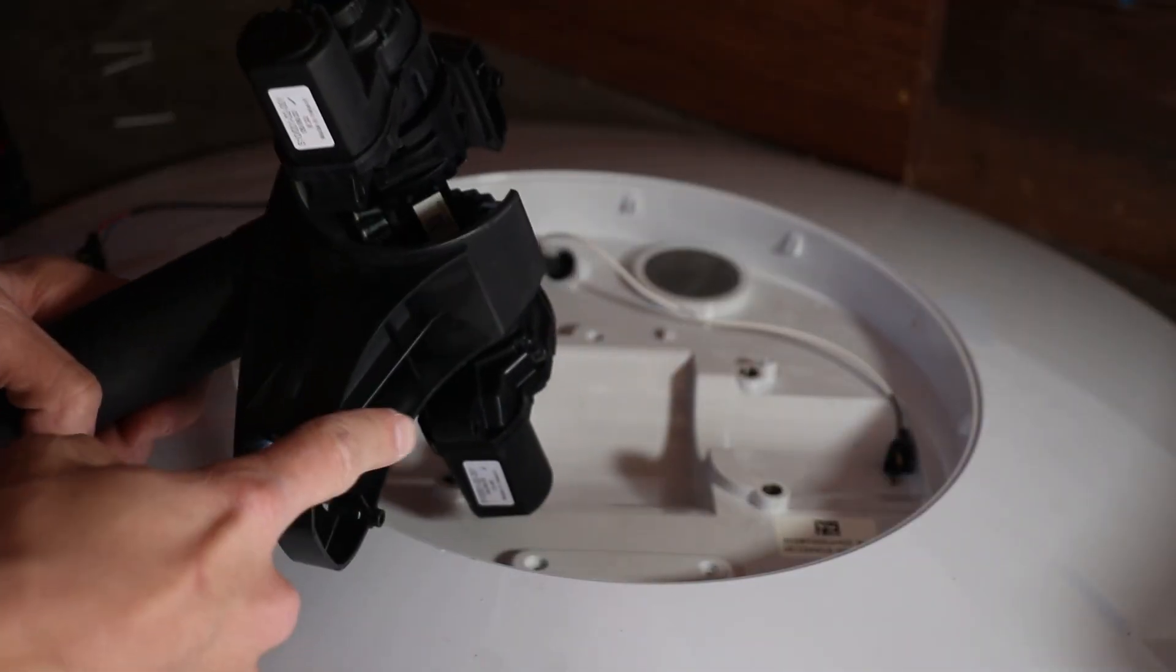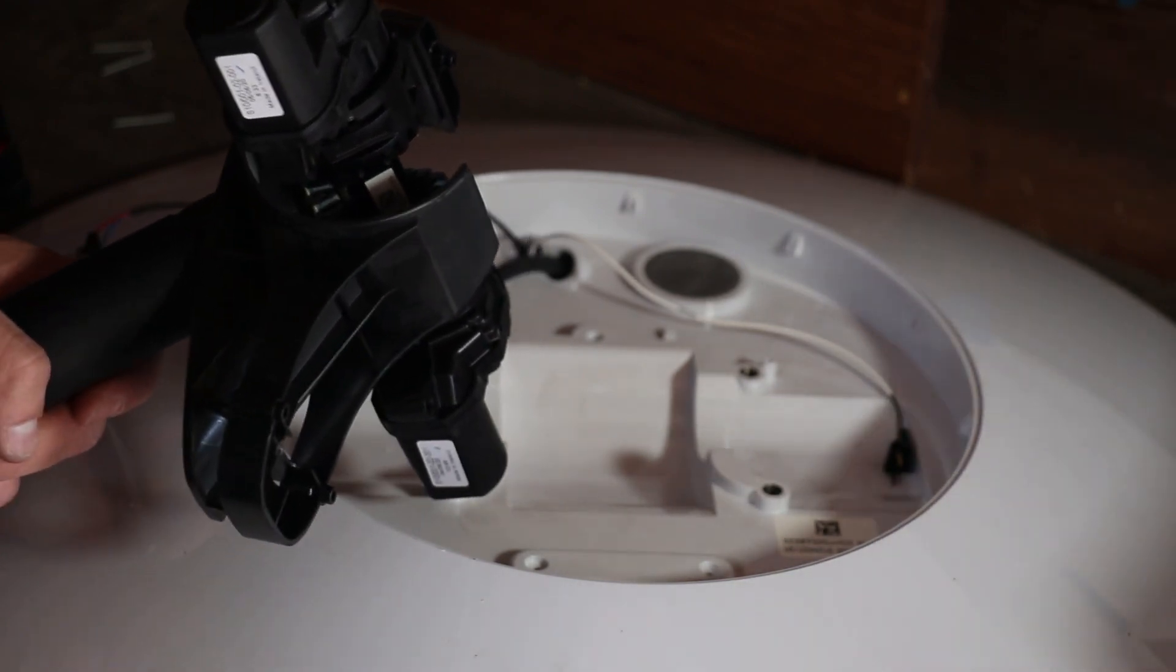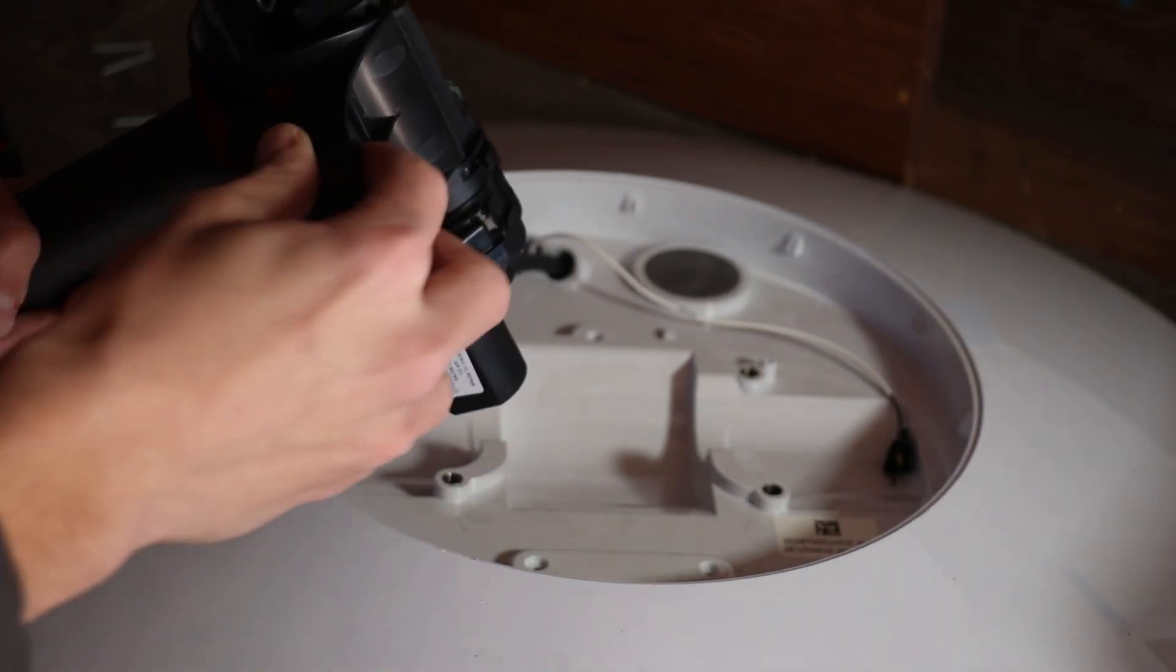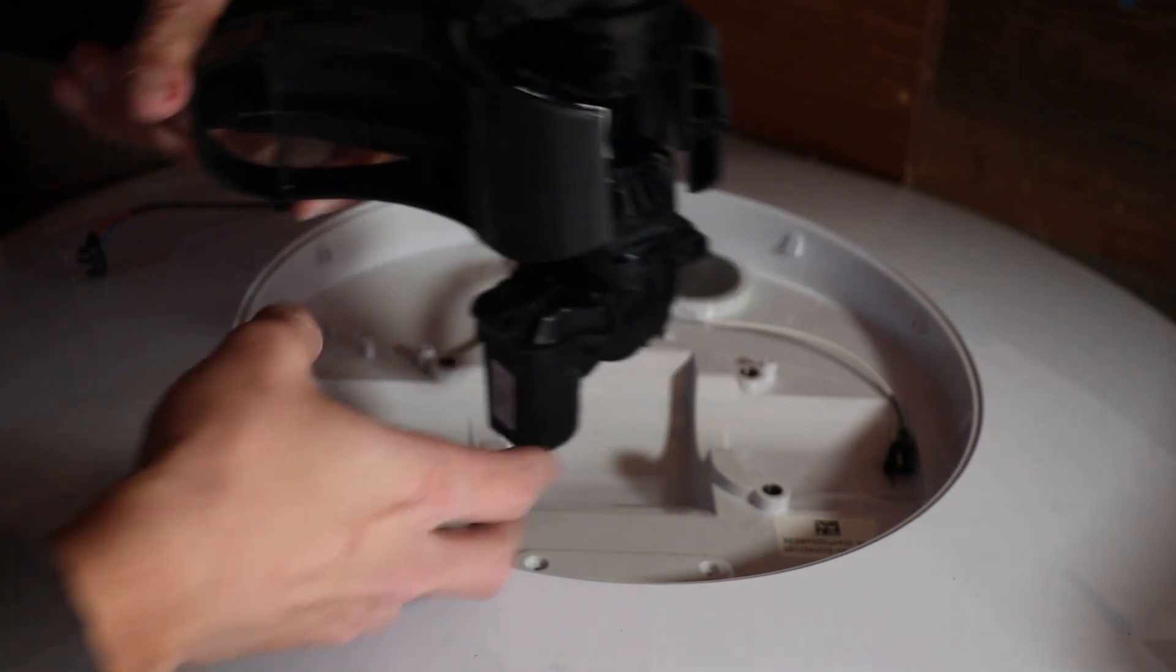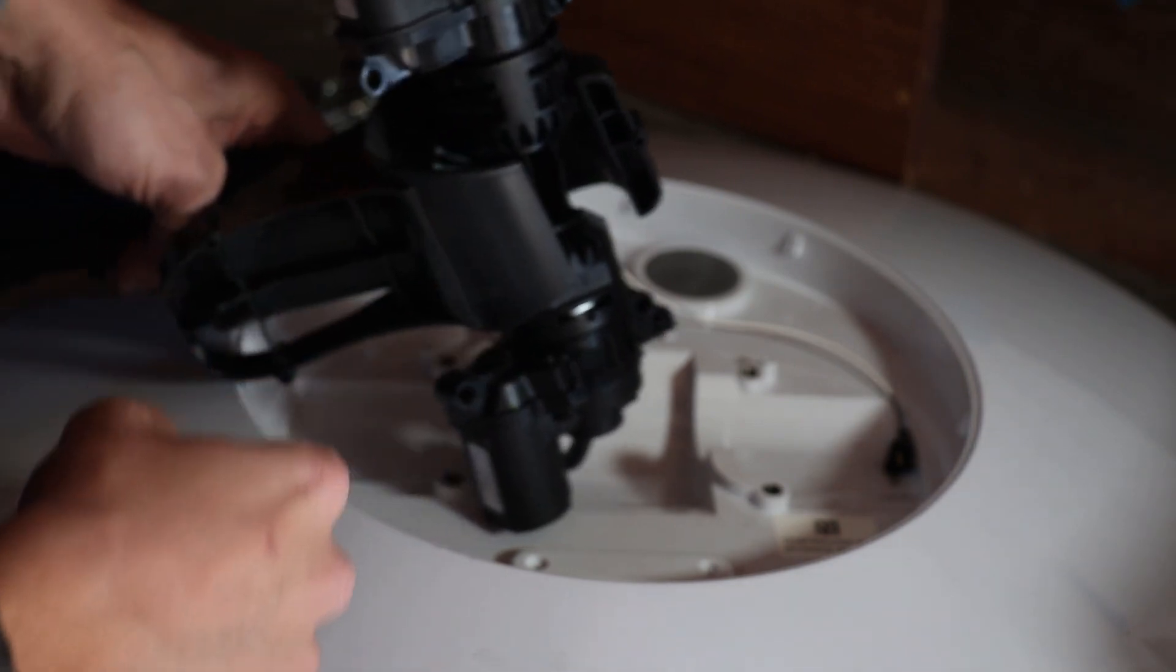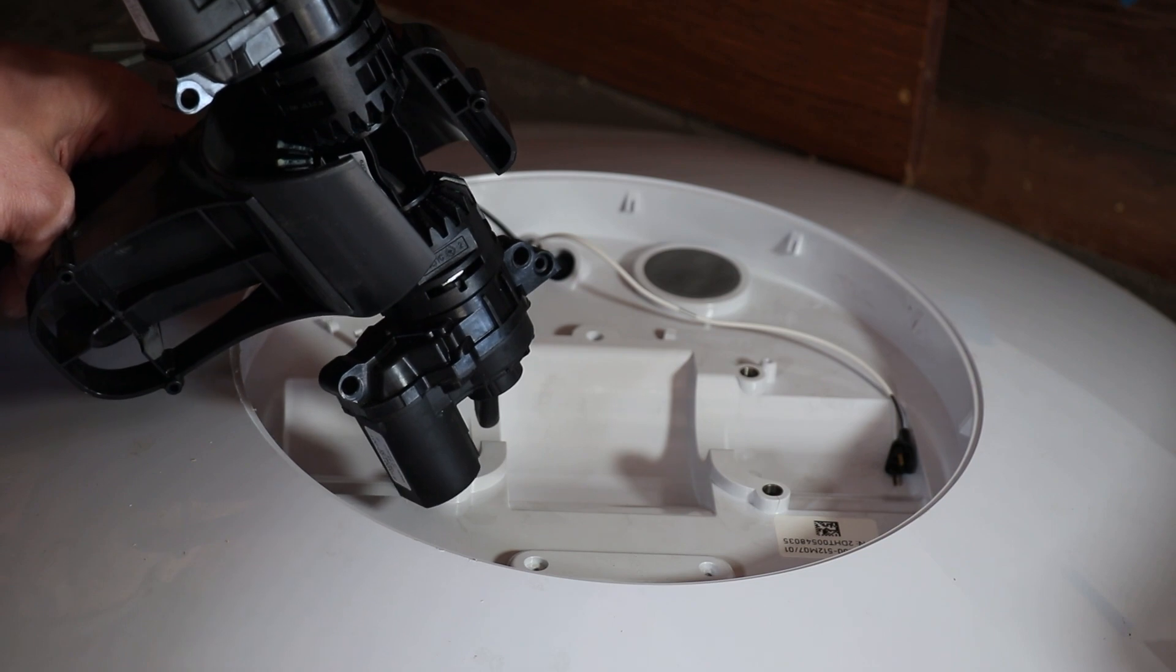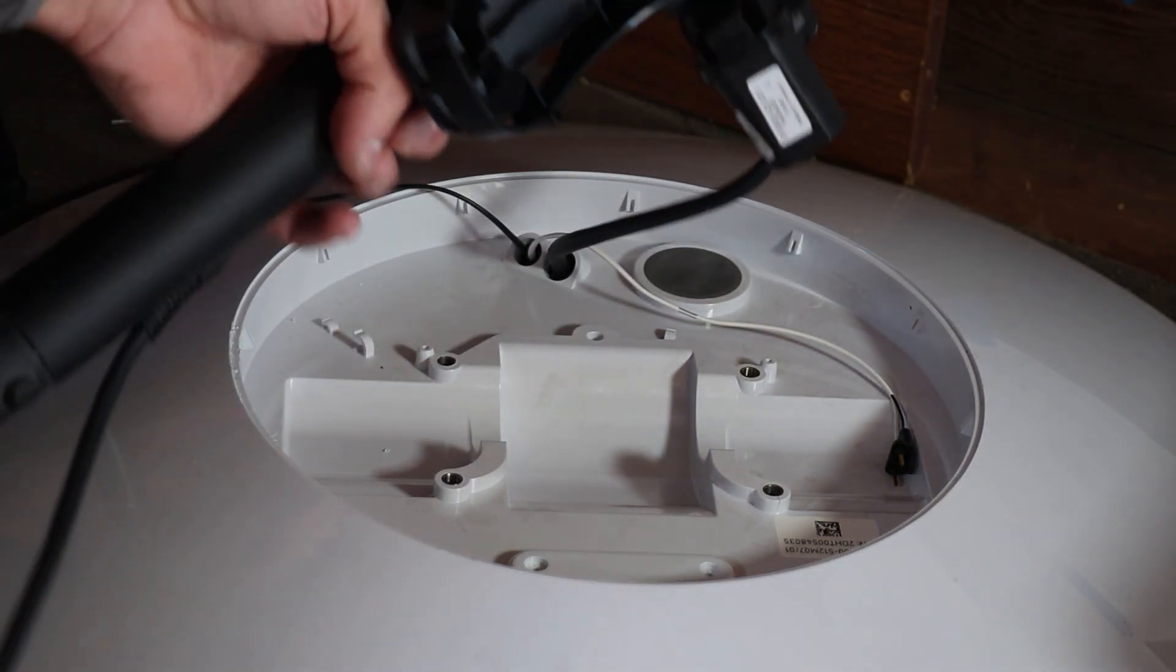So those are your motors. What you can see here are the motors for the Starlink dish. It has kind of a protective covering. And then you can see all the parts in here for controlling the up, down, left, right, all that fun stuff all in there. Very cool.